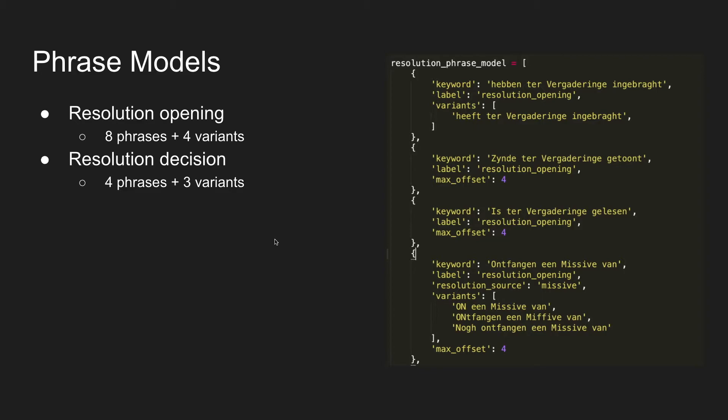A few more words on the phrase models: these are very simple lists of phrases. Per phrase we capture a few additional things like what type of phrase it is and what kind of information it signals, whether there are spelling variants to capture as part of the same formula, and whether the phrase has to occur at the start of a paragraph or not. For resolution openings we have a list of eight different formulas, with one or multiple variants each. For resolution decisions there are far fewer phrases, also with fewer variants.